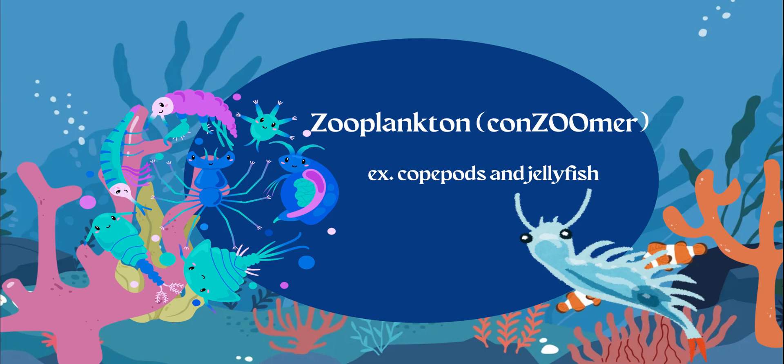Zooplankton — I want you to think of consumer. What do you go to the zoo for? Animals. So a zooplankton is actually a consumer and they are going to consume other organisms. Examples of this would be a copepod or a jellyfish.